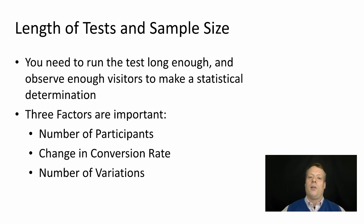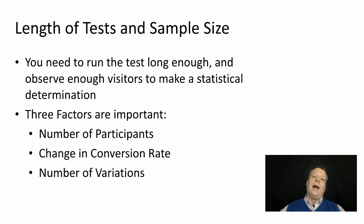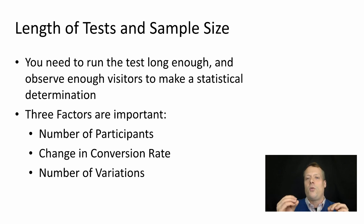The three factors are: first, the number of participants — in other words, the sample size you're going to look at. Second, how much of a change in the conversion rate do you consider to be minimally successful — is 1% enough, 2%, 6%? And finally, you also need to think about how many different variations: are you just doing A and B, or A, B, and C? Once you've made those decisions, the math works out really well and everything else falls out — I can tell you exactly how long to run your test for. In the next lecture, we're going to talk about that.